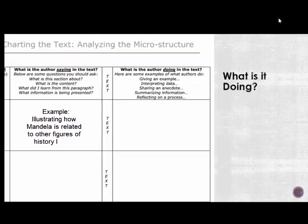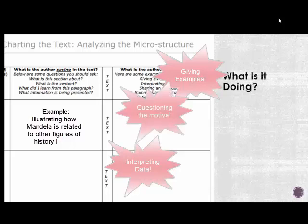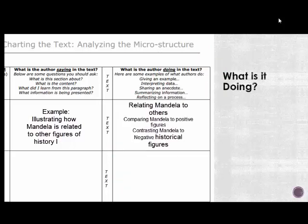Then you look at what is the author doing. Here you're going to be using those high-frequency verbs that I showed you before. They're giving an example, interpreting data, sharing an anecdote, summarizing information, or reflecting on a process. You have about 20 or more verbs to choose from, so you're choosing one or two of these verbs. Some paragraphs are doing more than one thing.